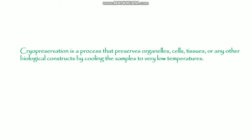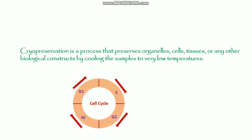Cryopreservation is a process that preserves organelles, cells, tissues, or any other biological constructs by cooling the samples to very low temperatures. During the cryopreservation process, cells stay in the quiescence phase or G0 phase. So all biological and physiological processes and cell cycle progression are halted during cryopreservation.